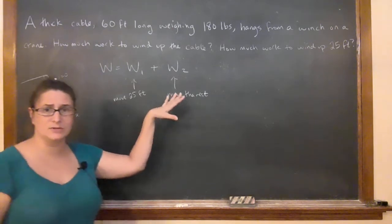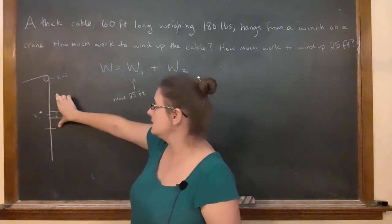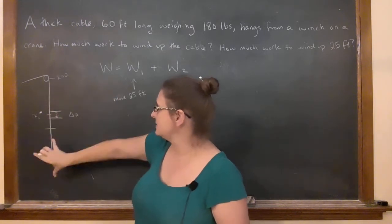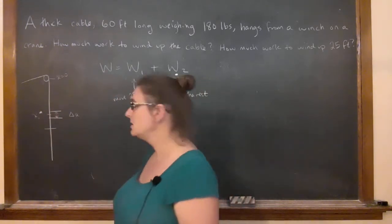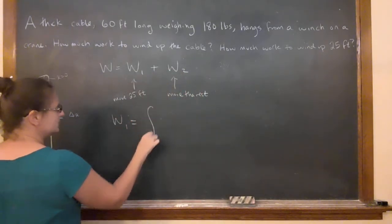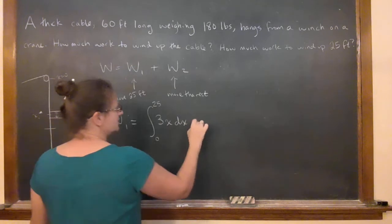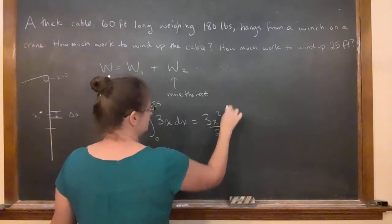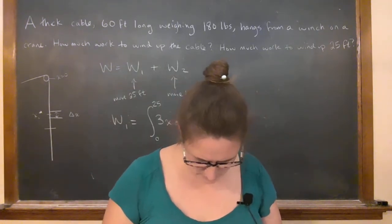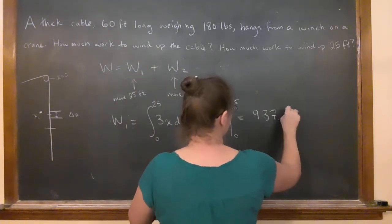The thing about this second part is it's really easy, because the weight of that other stuff doesn't change. The reason we have to do an integral is because the weight is changing here, because you have less and less. This is just a constant amount. So you don't even have to do an integral for this second part. The first part we already know, we just said we take the integral, not to 60, but of 25, and it's the same. So this is 3x squared over 2 from 0 to 25, which is 937.5.